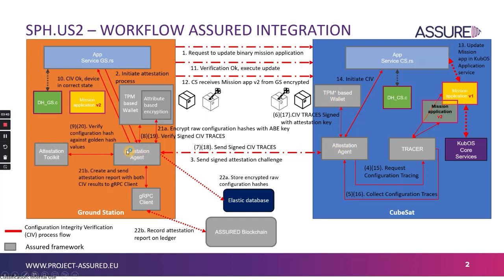Again, the attestation agent verifies the configuration hash against the hash values using the attestation toolkit, and this process ends. Following this, the attestation agent uses attribute-based encryption — a special component implemented in the TPM-based wallet — to encrypt the raw configuration hashes. The attestation agent then creates and sends an attestation report containing both CIV results to the gRPC Client.